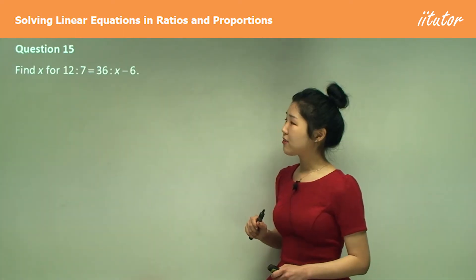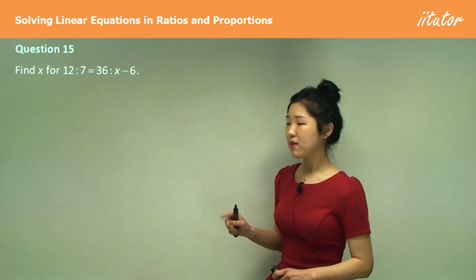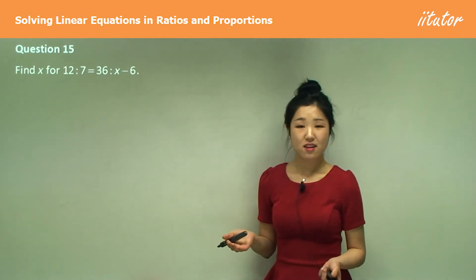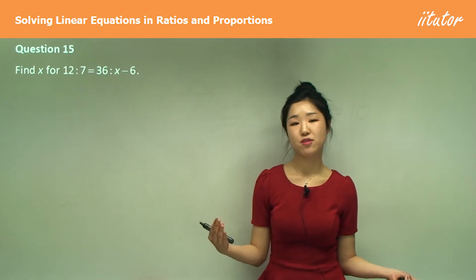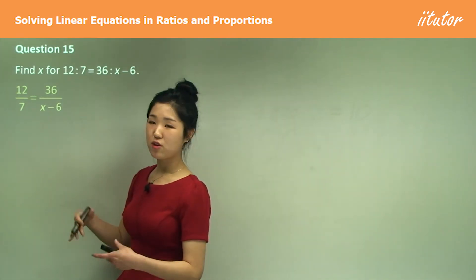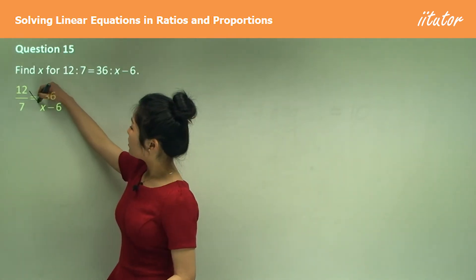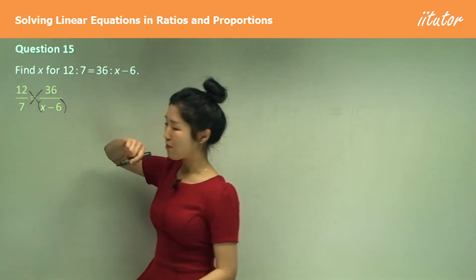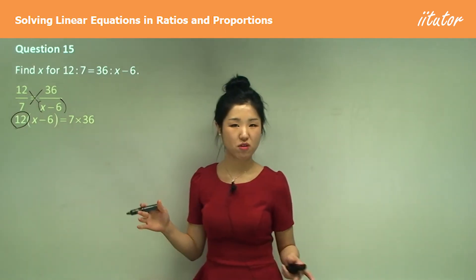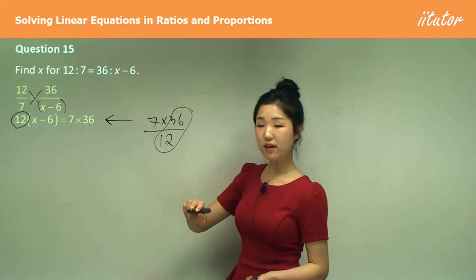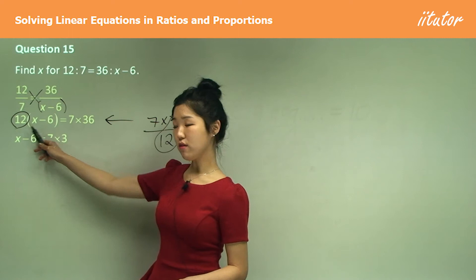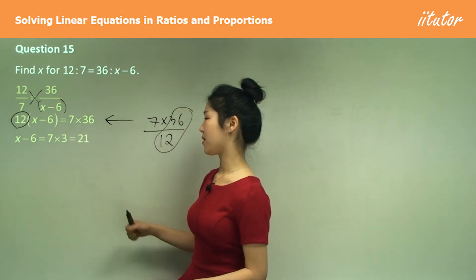Question 15: this time it's in ratio colon form. Ratios are treated exactly the same as fractions. Convert it to a fraction if you prefer, then cross multiply — 12 times (x − 6) and 7 times 36. To get rid of the 12, divide: 36 divided by 12 is 3. So 7 times 3 is 21.